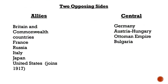A quick overview of the two sides: they are generally called the Allies and the Central Powers. The Allies included Britain and all the Commonwealth countries — including Canada — as well as France, Russia, Italy, Japan, and the United States, though the US doesn't join until 1917. On the other side, the Central Powers included the newly formed country of Germany, Austria-Hungary, the Ottoman Empire, and Bulgaria.